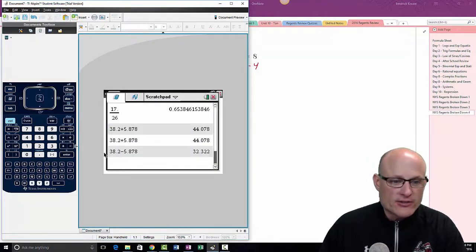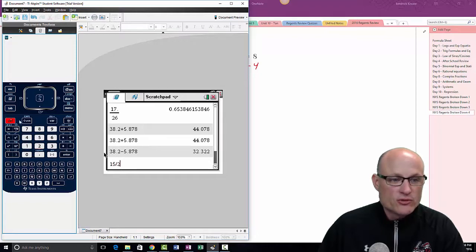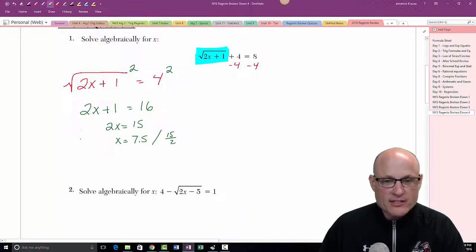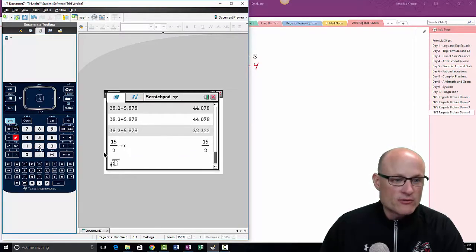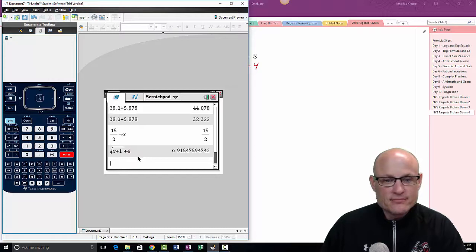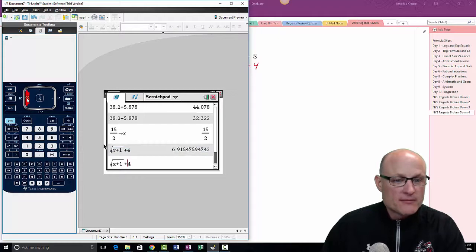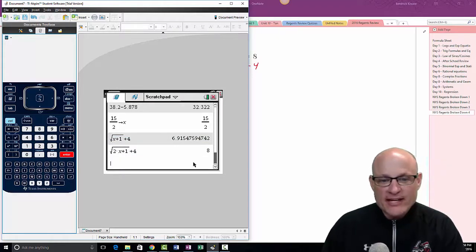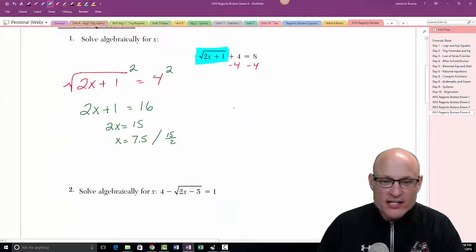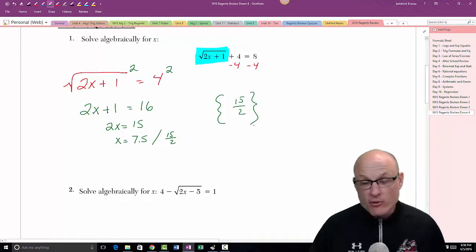If you come over to your graphing calculator, 15 divided by 2 stored to x, you could also do 7.5, it's the same thing. We're going to type this in. You type in the left side: square root of 2x plus 1 plus 4. We're hoping this turns out to be 8. There it is, it's in fact 8, so it does check. Make your answer look professional: 15 over 2 or you can put 7.5.